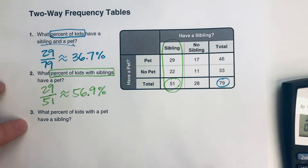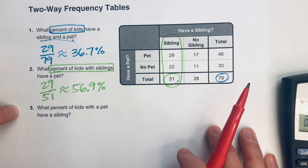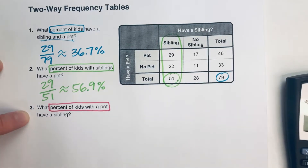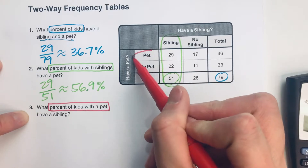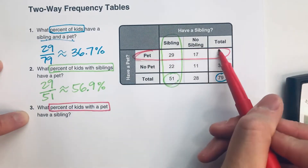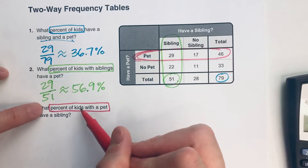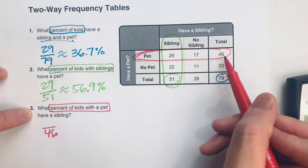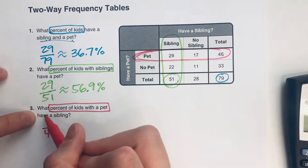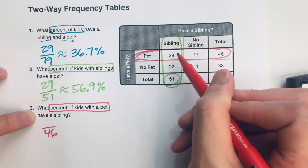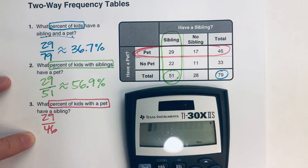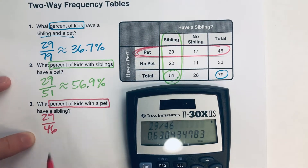Last question: what percent of kids with a pet have a sibling? Our whole is kids with pets. Pets read horizontally, so we're looking at that row this time. There are 46 total kids with a pet — that's our whole. Out of those 46 kids, 29 of them have a sibling. So 29 divided by 46 gives us approximately 63.0%.